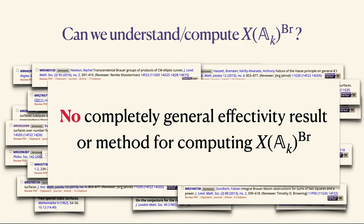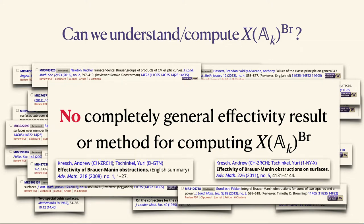I said 'completely general.' We do have two effectivity results that I describe more in the notes. They're both by Kresch and Schinzel. In one, they show that a larger subset, the algebraic Brauer-Manin subset, is effectively computable. In the second, for surfaces, they show that the Brauer-Manin set coming from the N-torsion in the Brauer group is effectively computable for any given N. These are effectivity results, not algorithms with complexity analysis — a fairly different flavor than this morning.